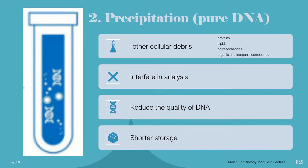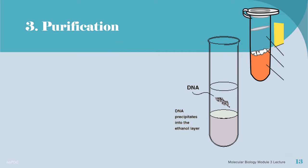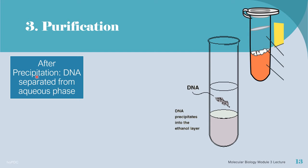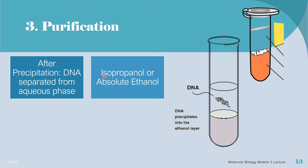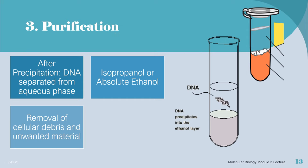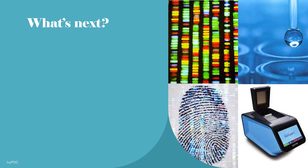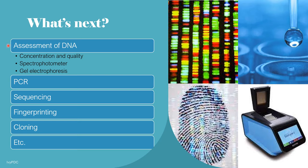After the separation of DNA during the process of precipitation, where the DNA is now located in the ethanol layer, it is rinsed with alcohol — either isopropanol or absolute ethanol — and this process is known as purification. Purification removes all of the remaining cellular debris and unwanted material. Once the DNA is completely purified, it is usually dissolved in water again for convenient storage and handling before specimen processing.